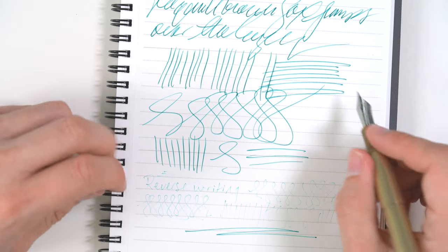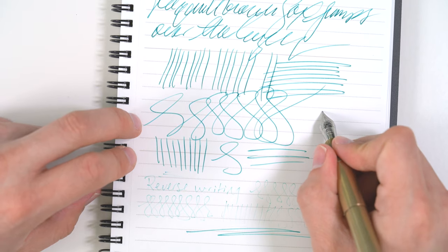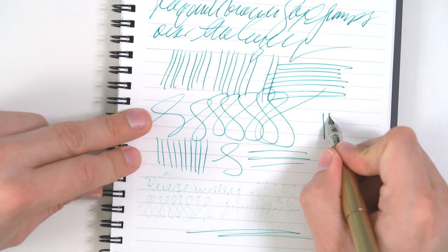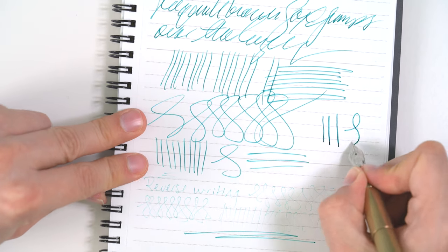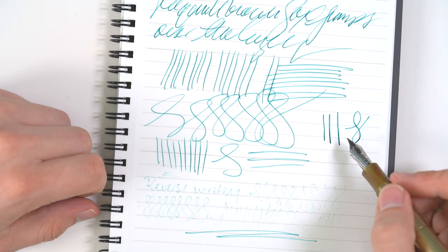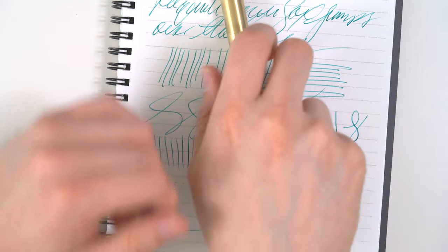Now, in terms of line variation, this is pretty much a nail of a nib. I'll try pushing a little bit, but there's pretty much no line variation. It's a nail. That's the writing sample.